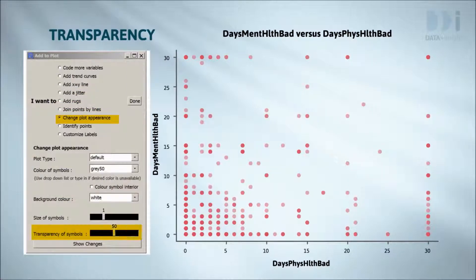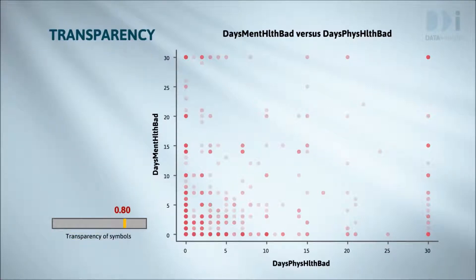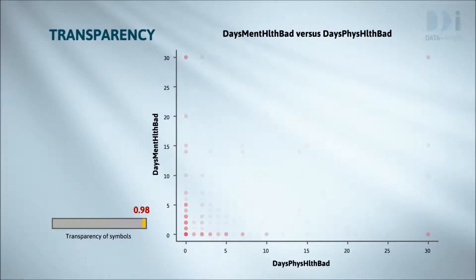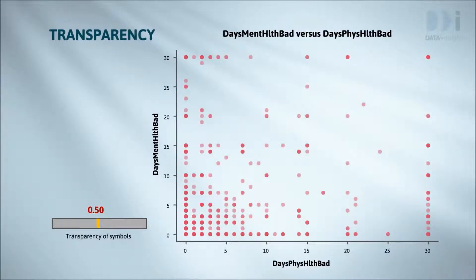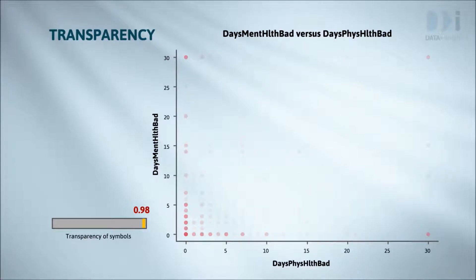We'll now switch to transparency. We're using disks that are semi-transparent. This way, as the number of disks sitting on top of one another gets bigger, the colour gets darker. The faintest points represent a single observation. Because this example is so extreme — 40% of observations sitting on a single position — by making the transparency extreme enough to show there are more points at 0,0 than anywhere else, I have almost lost sight of positions that represent one point. This isn't a problem because we don't just look at a single image; we keep varying the transparency setting until we have a good idea of what's going on. Any single image can mislead us.